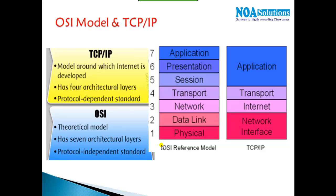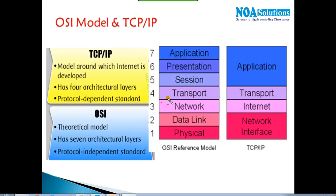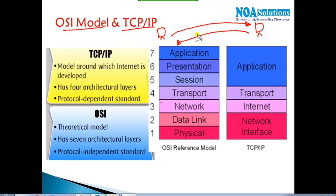In this video we'll be discussing the OSI model and TCP/IP protocols. The OSI model is a reference model which provides a method to explain how the communication process happens between two or more networking devices. There is a device sending a request to a server and the reply is coming back — this entire process is explained in detail by the OSI model and TCP/IP models. Practically we use TCP/IP protocols.